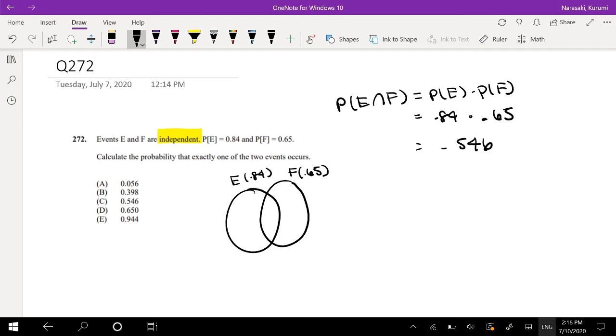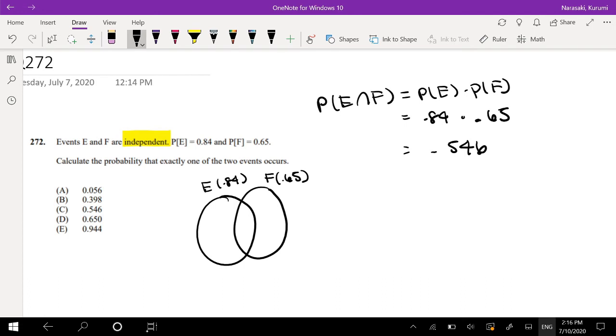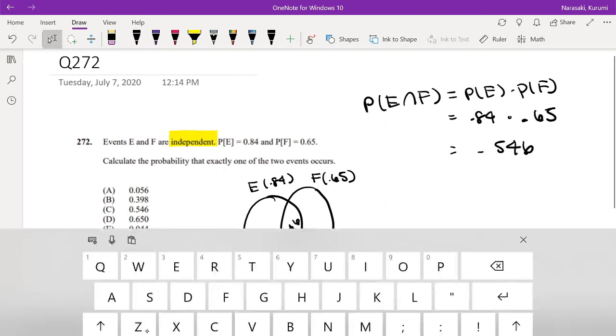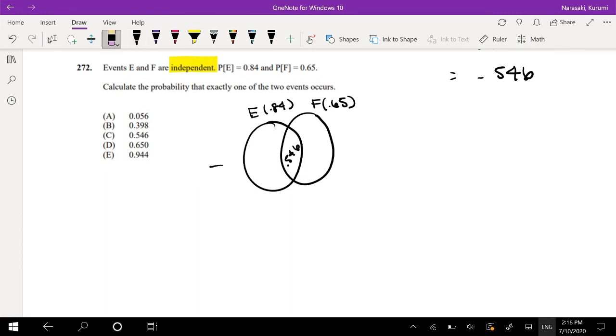Okay, so then the center we know is 0.546. Then just the E part is 0.84 minus 0.546, which equals 0.294. The other side we have is 0.104.